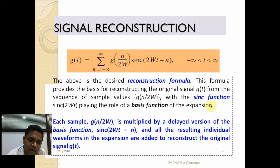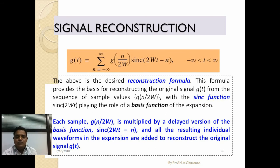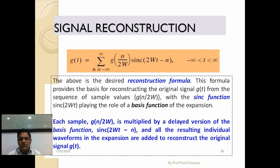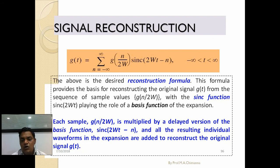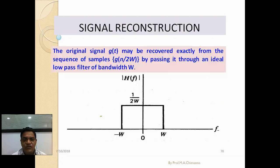The sinc function is the basic function of the expansion. Each sample g(n/2W) is multiplied by the delayed version of the basic function sinc(2Wt minus n), and all the resulting individual waveforms are summed to reconstruct the original signal g(t). The original signal g(t) may be recovered exactly from the sequence of samples g(n/2W) by passing it through an ideal low-pass filter having bandwidth W.